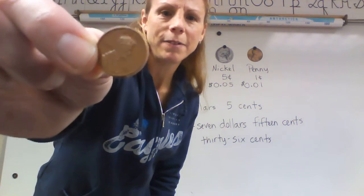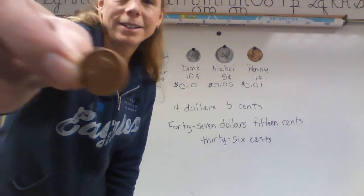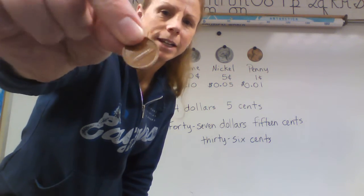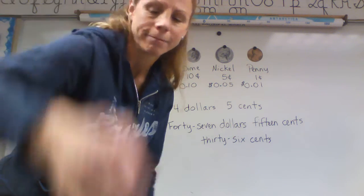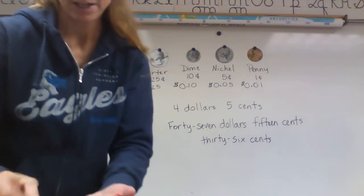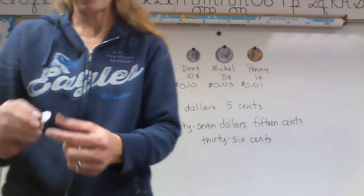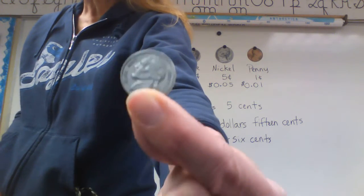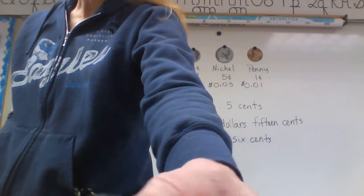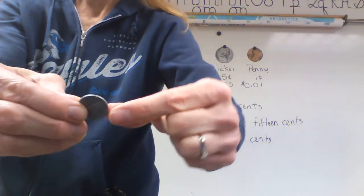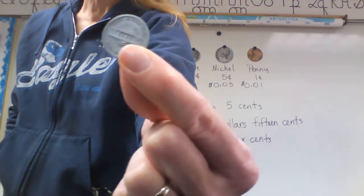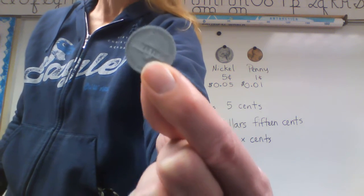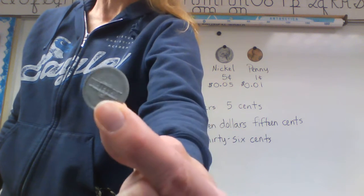Right here we have the penny, and that's Abe Lincoln on the front and on the back is the Lincoln Memorial. Then we have the nickel, worth five cents. On the front of that is Thomas Jefferson, and on the back is his home which is called Monticello — still called Monticello today, but obviously he's not alive.